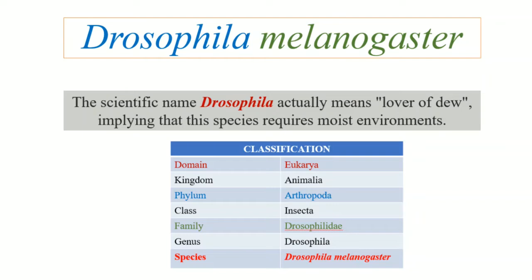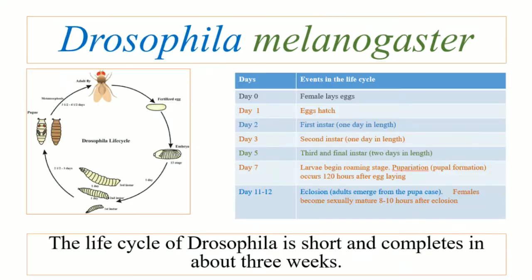Talking about the classification, Drosophila melanogaster belongs to domain Eukarya, kingdom Animalia, phylum Arthropoda, class Insecta, family Drosophilidae, genus Drosophila, and the species is Drosophila melanogaster.